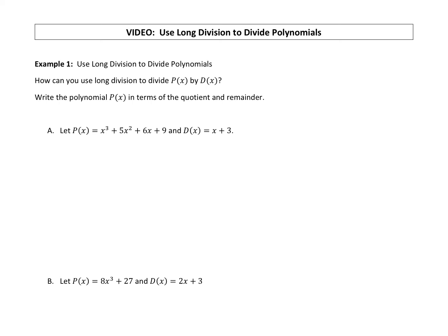We are going to use long division to divide polynomials, following the same process as regular number long division. We're going to divide P(x) by D(x), so the P(x) polynomial goes underneath the long division symbol, and what you're dividing by goes off on the side. When you do long division, you're going to focus on leading terms.